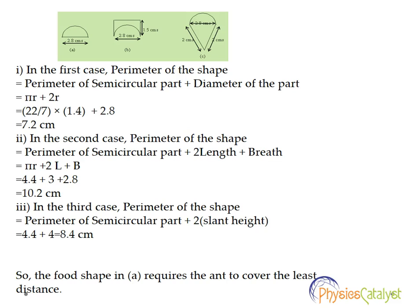So substituting the values of π and r here, we get the perimeter of the first shape as 7.2 centimeters.